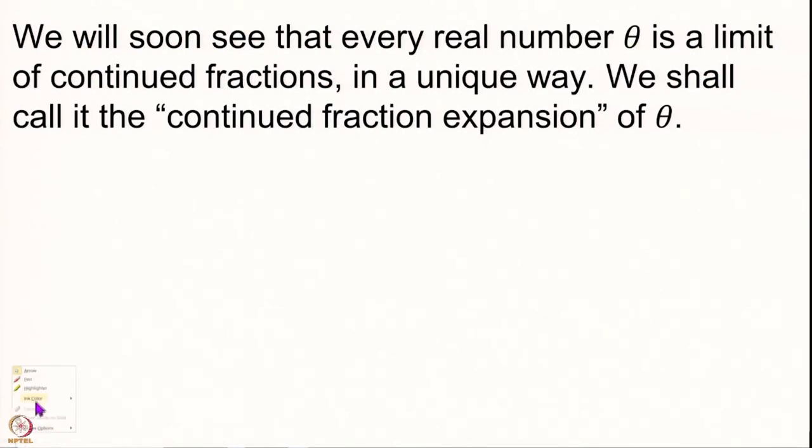We are not just looking at any limit of continued fractions approximating a given real number theta, but we would like these continued fractions to be related to each other in the sense that the nth continued fraction is obtained from the (n−1)th only by adding one last entry at the last level. This is what we call a continued fraction expansion of theta. We still have to construct such an expansion — the sequence of continued fractions which converge to any given real number theta in this very special way.